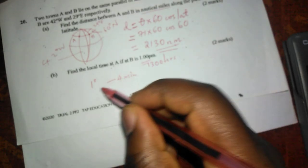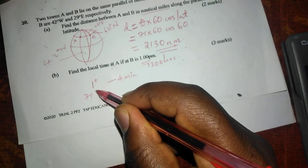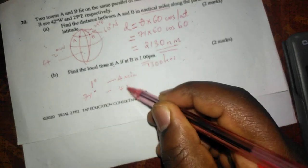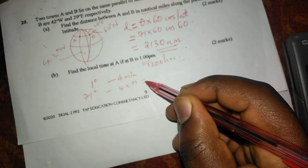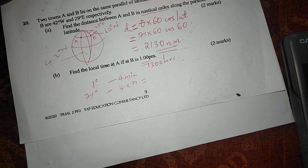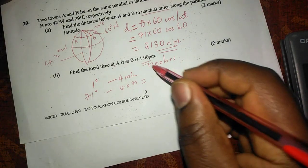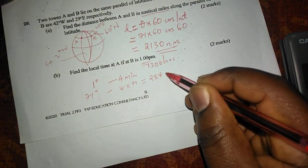This means for the longitude difference of 71 degrees, then we will have 4 times 71, which gives us 284 minutes.